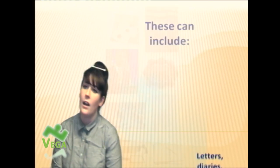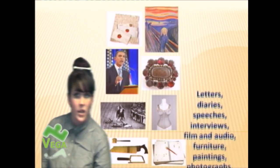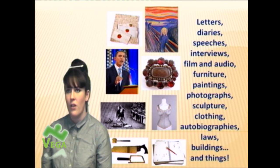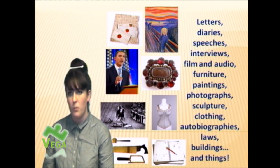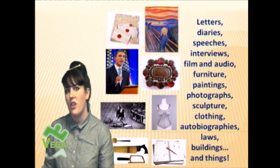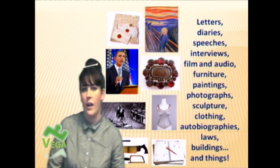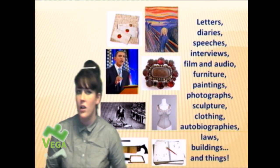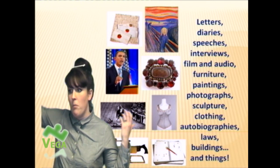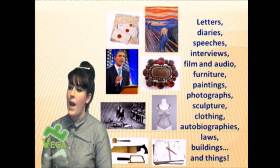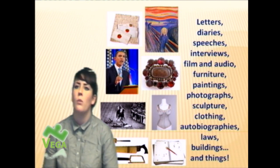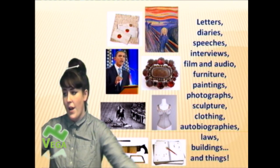Primary resources can include letters, diaries, speeches, interviews, film and audio recordings, furniture, paintings, photographs, sculpture, clothing, autobiographies, laws, buildings, and things — by things I mean anything that existed at the time you're studying. So it could be an ancient Greek vase, a Victorian sewing kit, or something you found in your mother's attic. If you're doing a research topic on a particular country, objects from that country would count. So primary sources include loads and loads of things.